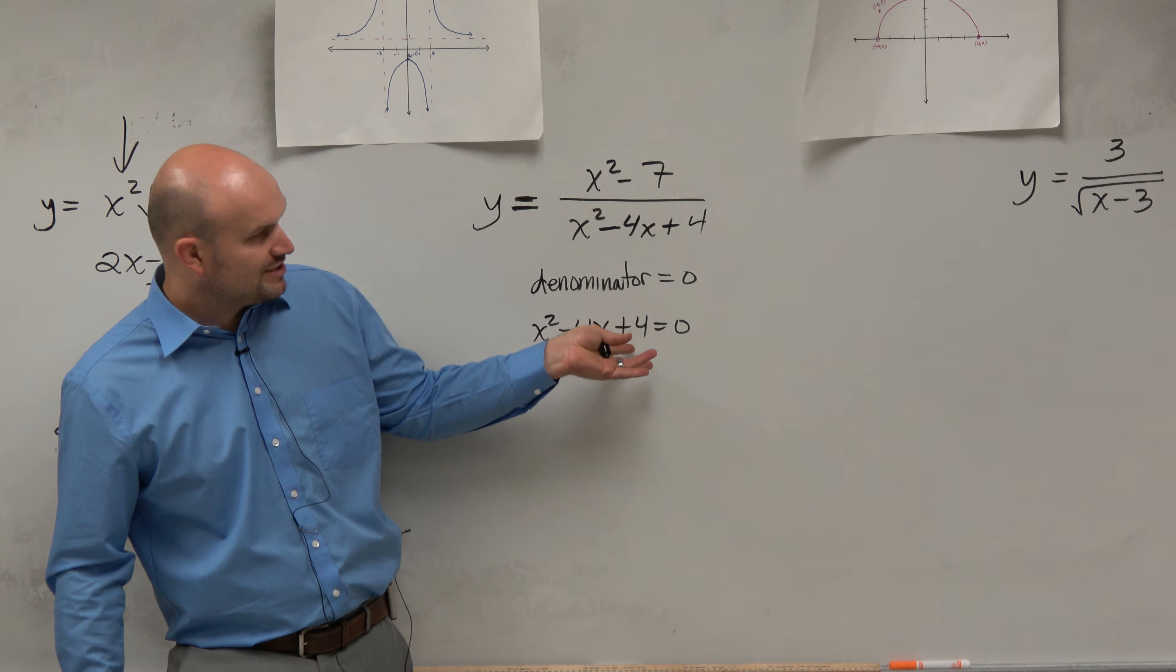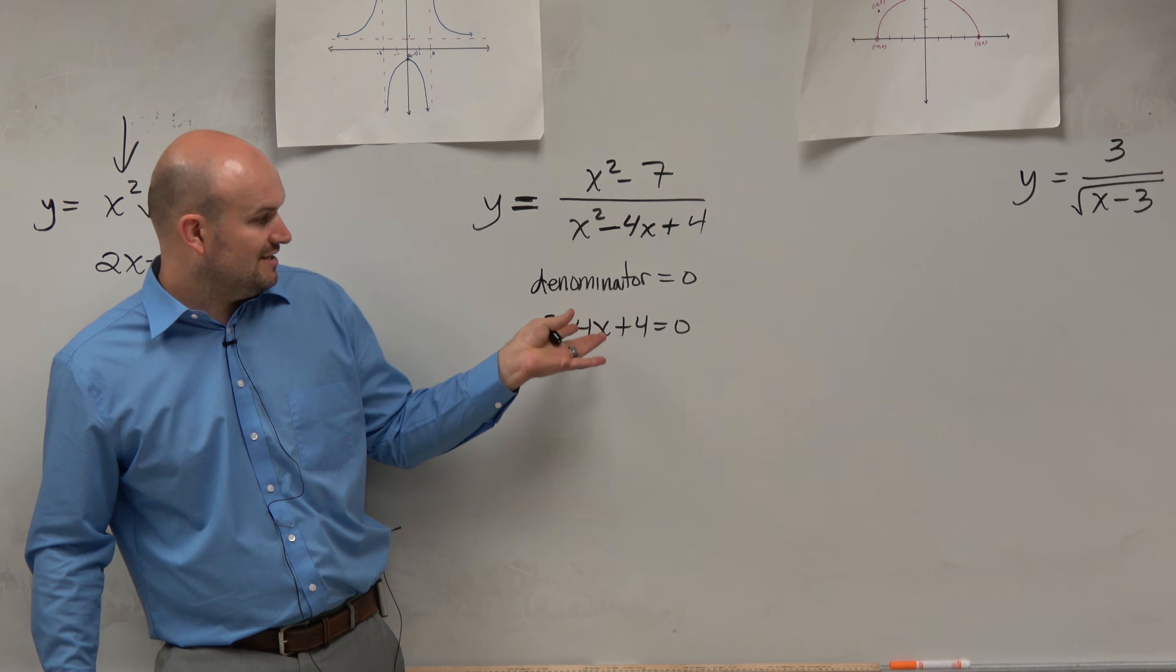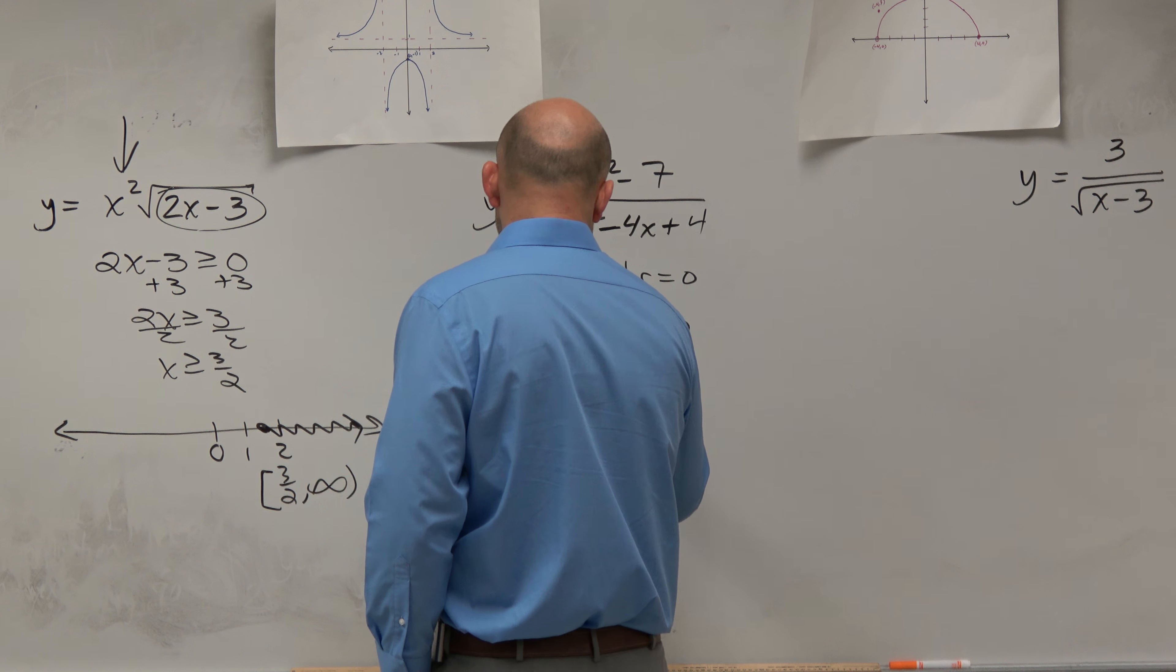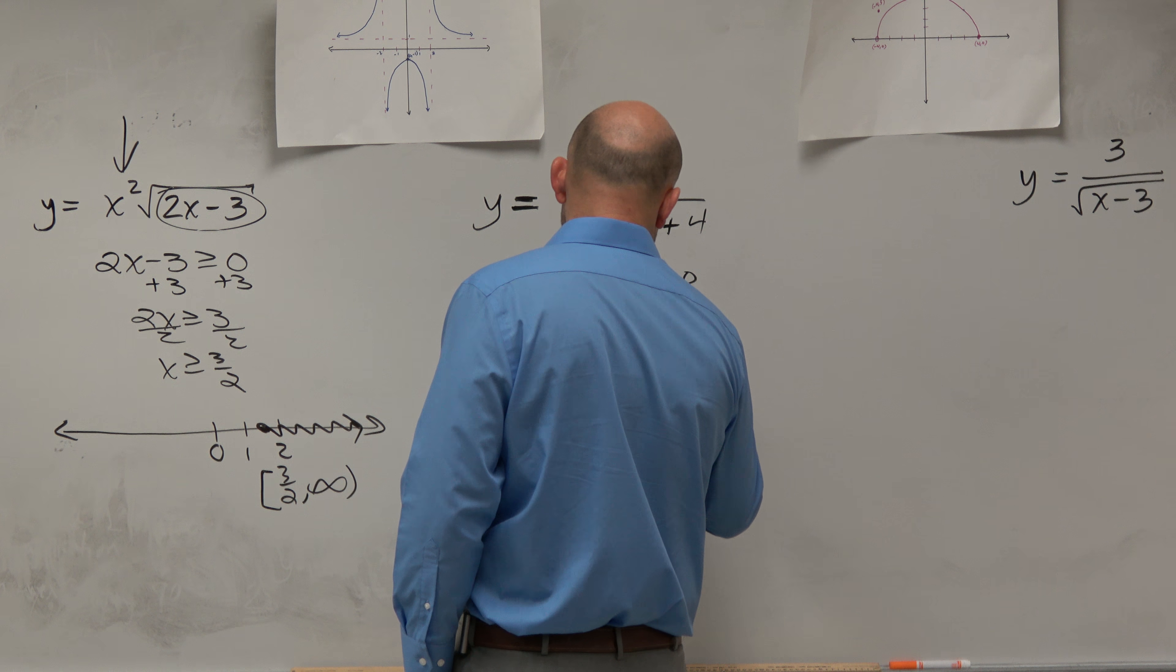It's a perfect square trinomial. What two numbers multiply to give you 4, add to give you negative 4? You could say, oh, that's x minus 2 times x minus 2.